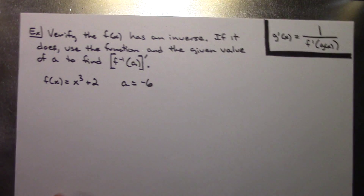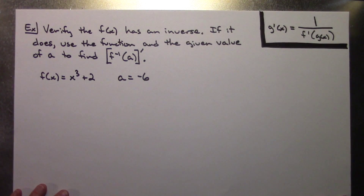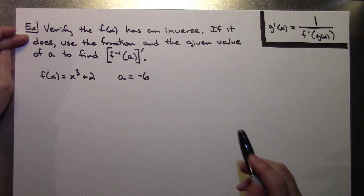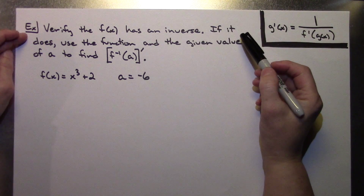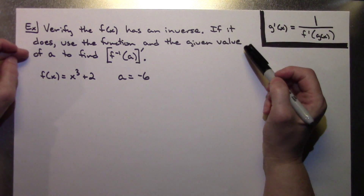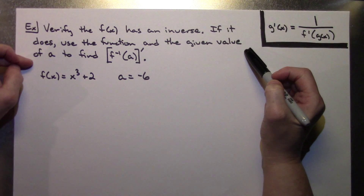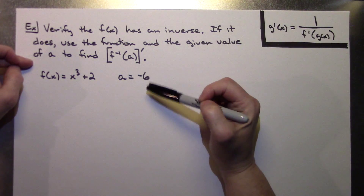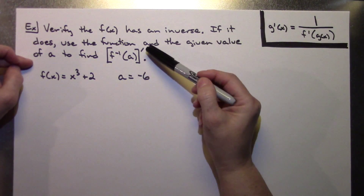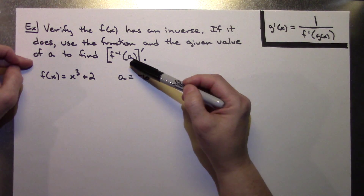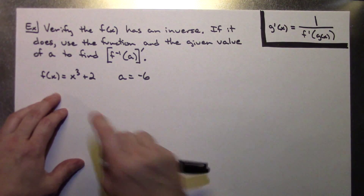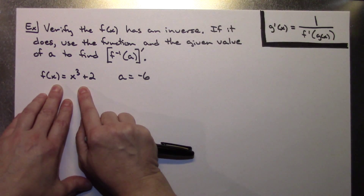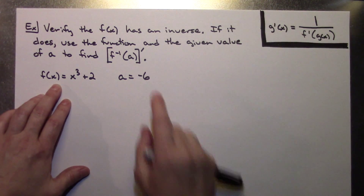In this first example, let's suppose that they ask you to verify first that the function has an inverse, and then if it does, you're going to use the function and the given value of a to find the derivative of the inverse function at a. Let's say our function is f of x equals x cubed plus 2, and our value for a is negative 6.